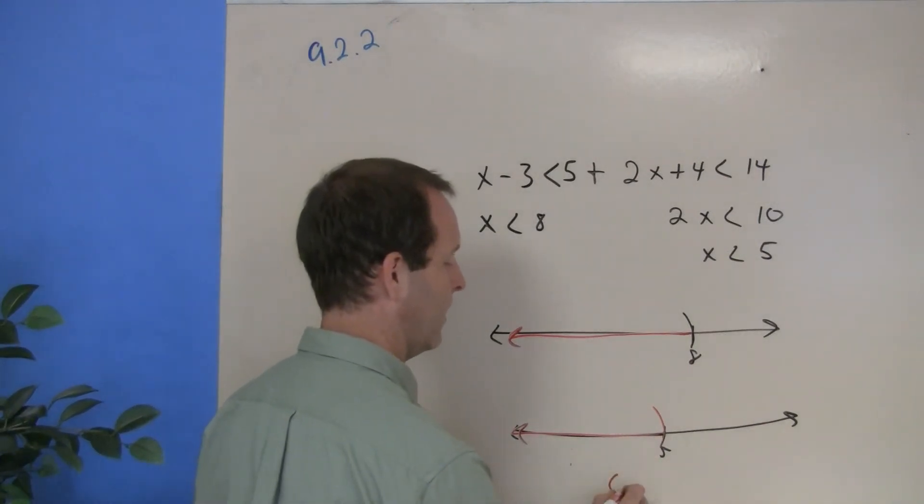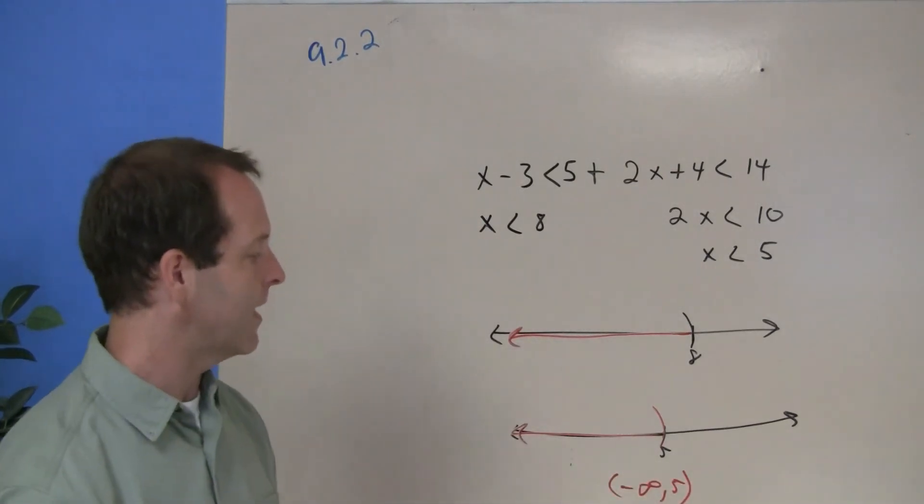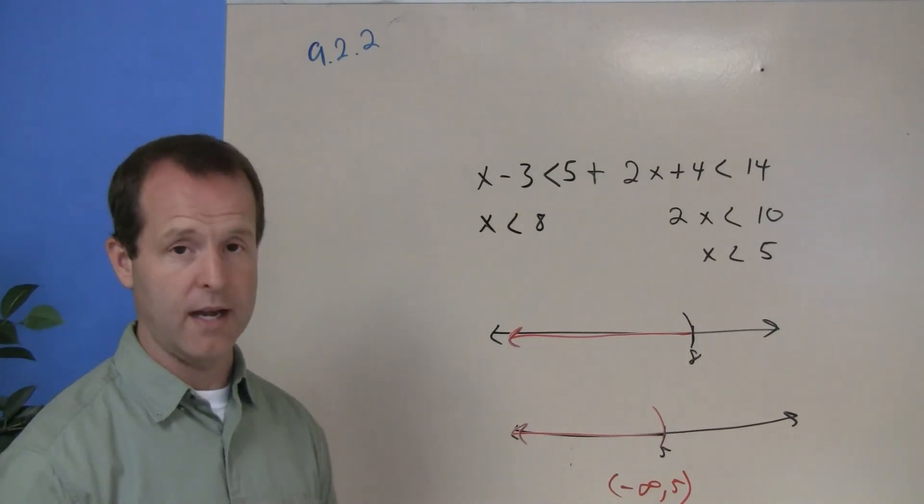Or another way to write it would be the interval notation of negative infinity to positive 5. And so that's the solution set to this compound inequality.